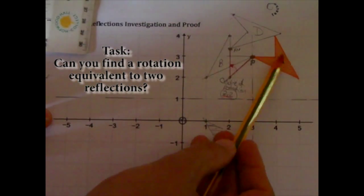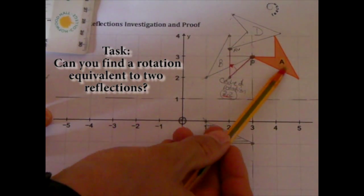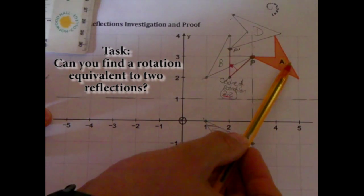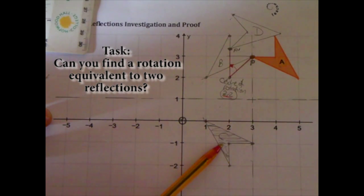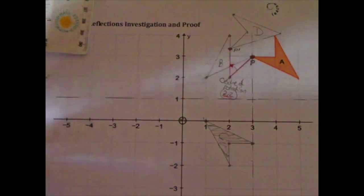So recap, reflect it twice, and then can you find a rotation, and the center of rotation, that would get that shape back onto the second reflection? Over to you.